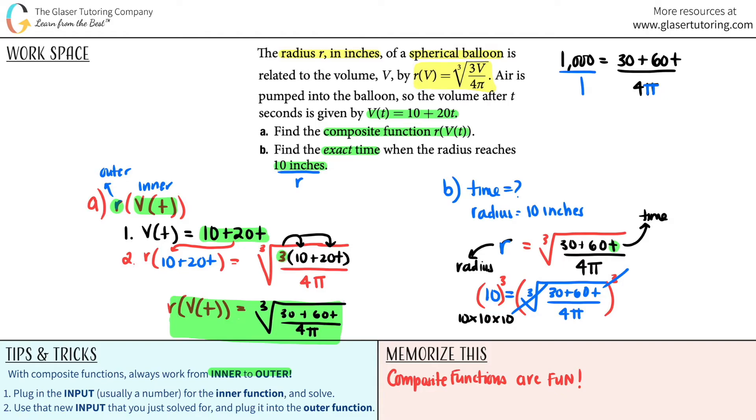So now we come here and I can say that this is a thousand over one. And now I have two fractions. What you can do is you can cross multiply. So a thousand times 4π equals 30 plus 60t. And now I'm actually going to do this math.